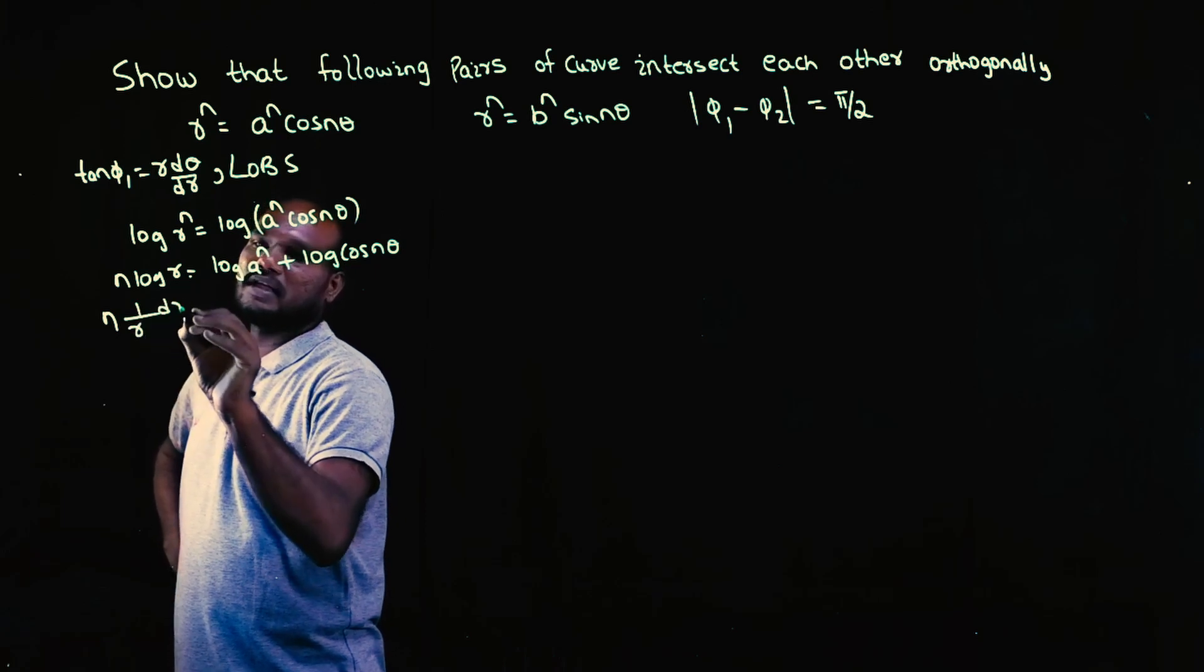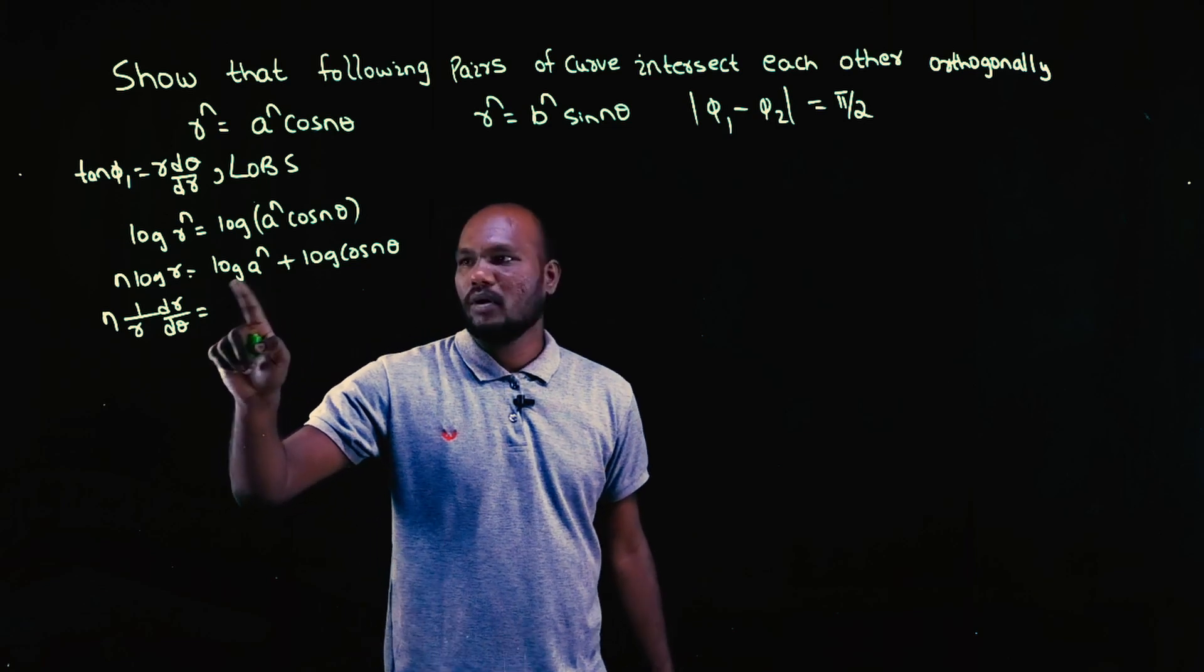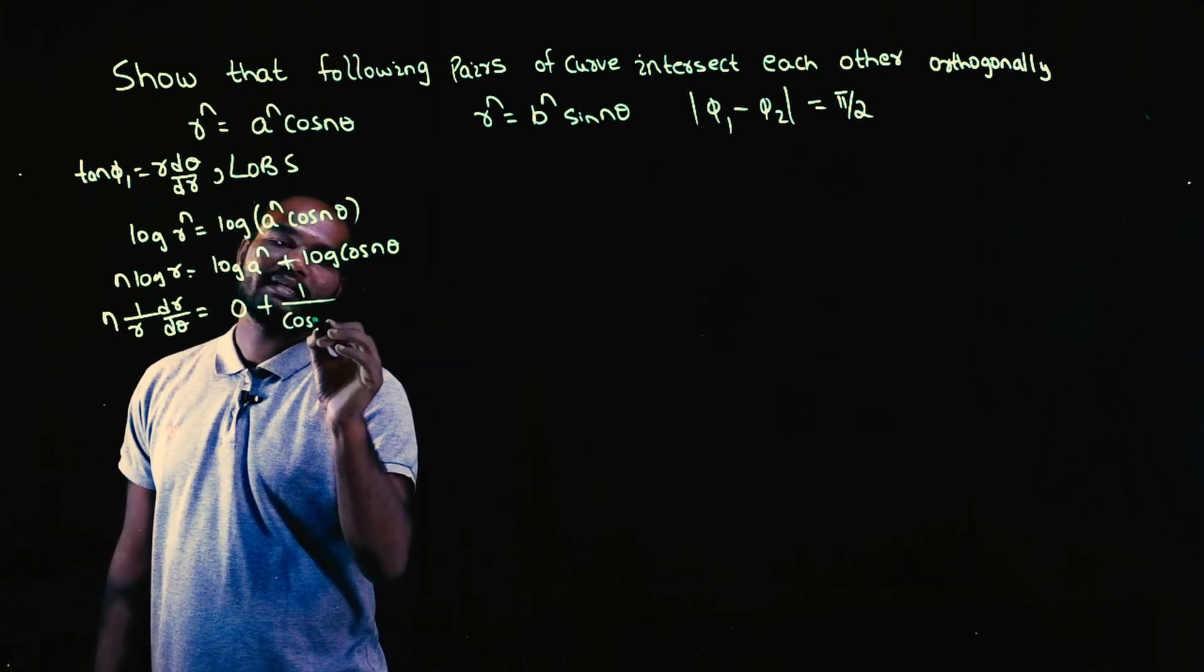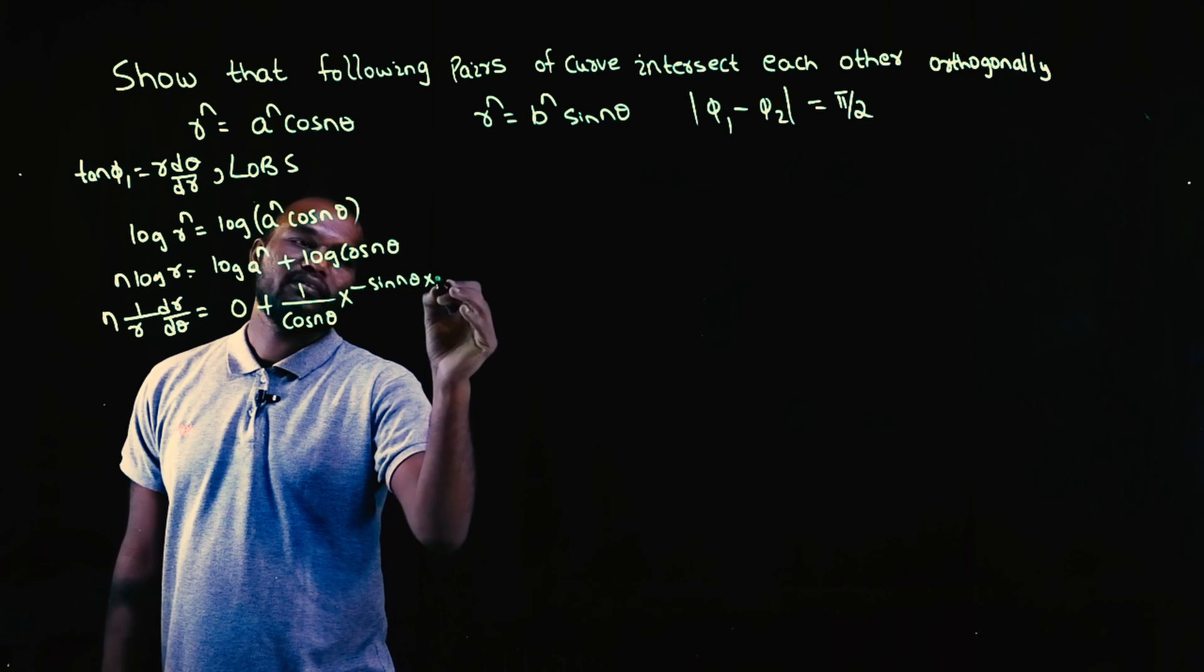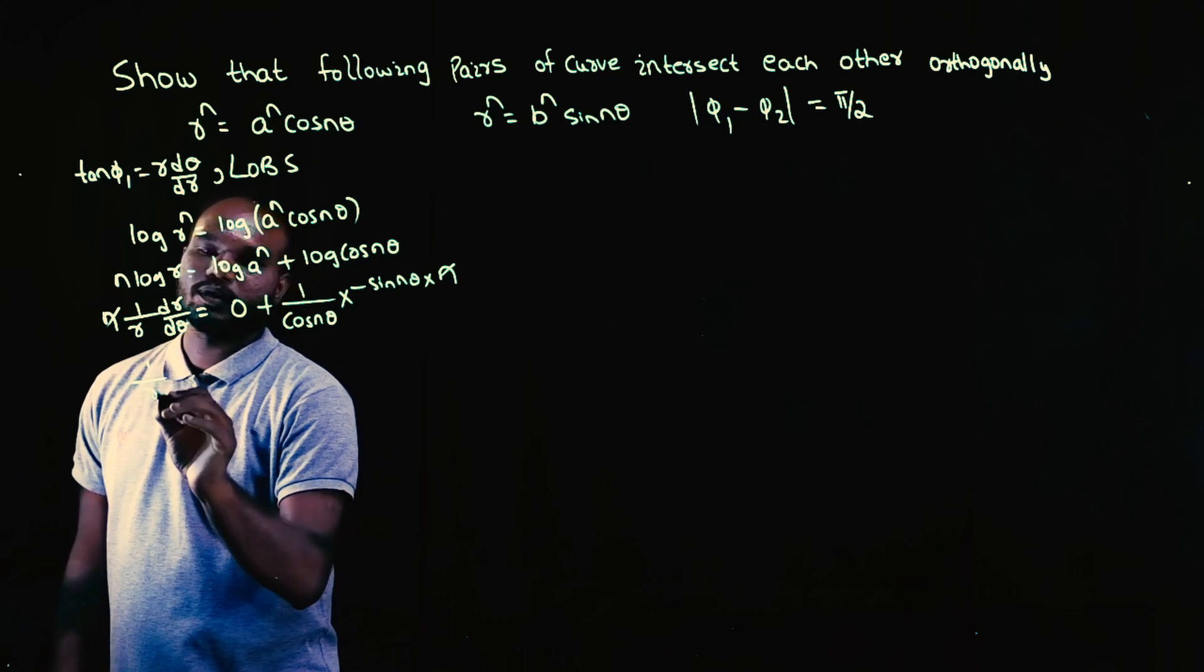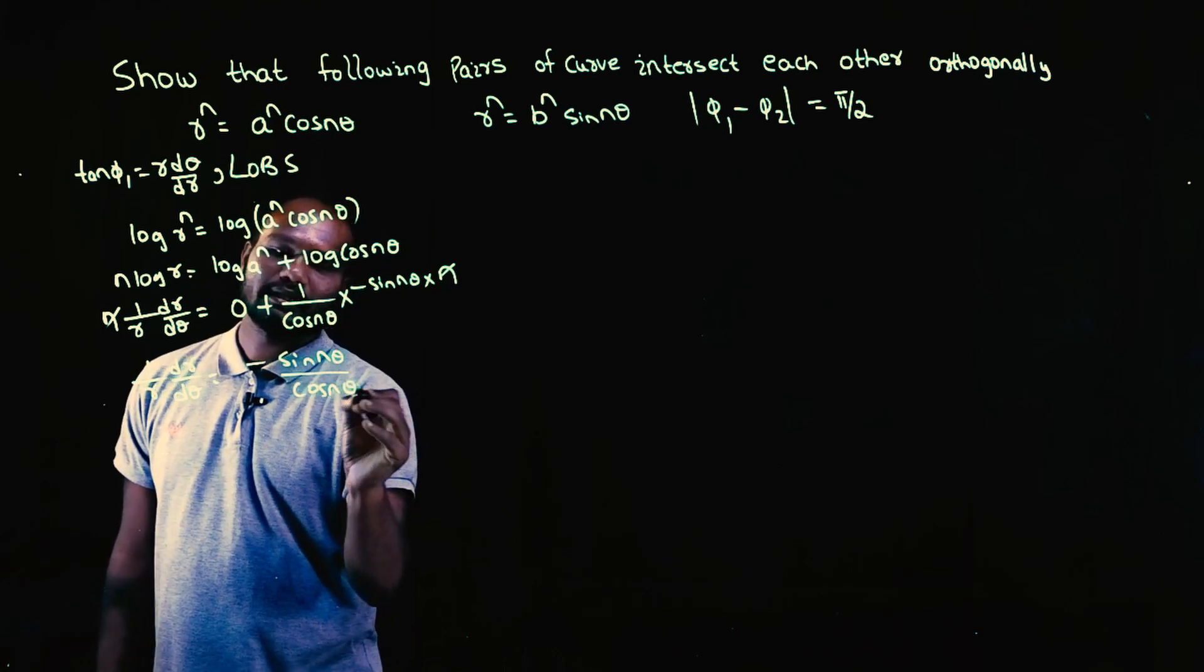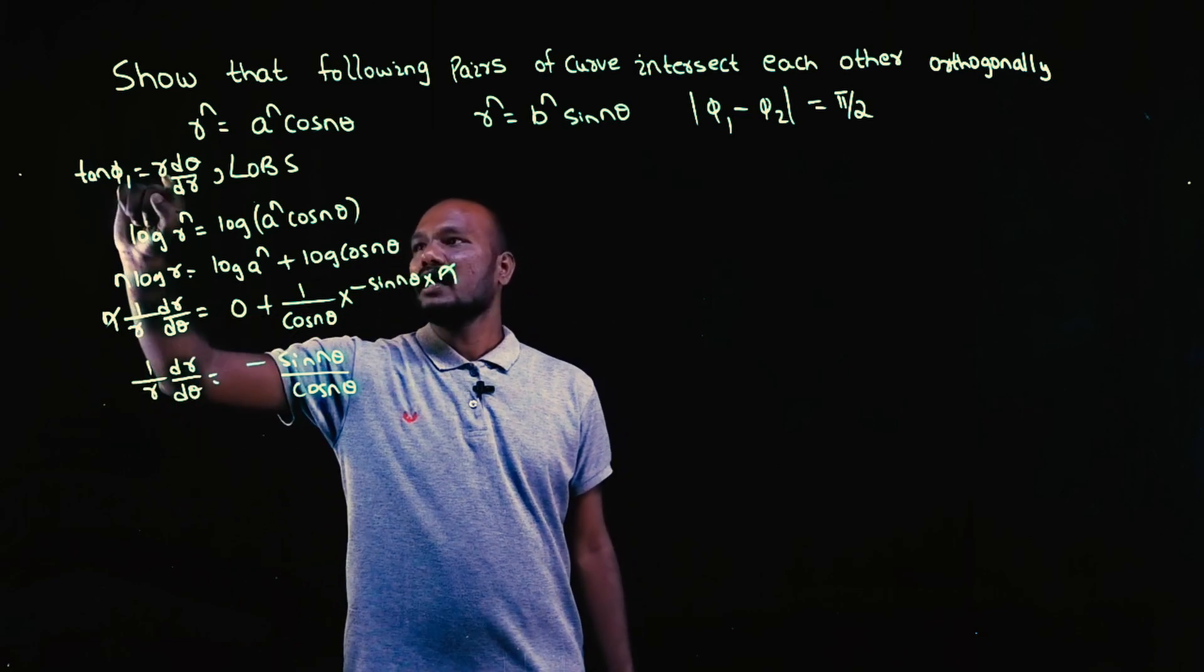Log r differentiation is 1 by r dr by d theta. A is a number, so whole of this is a number. Number differentiation is 0 plus log cos n theta differentiation: 1 by cos n theta times cos n theta differentiation is minus sin n theta times n. So 1 by r dr by d theta is equal to minus sin n theta upon cos n theta.